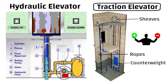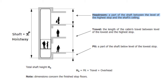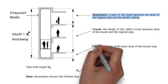Shaft, also known as hoist way, is the space in which one or more elevator cars move. This space is enclosed by fireproof walls, pit, and ceiling for the travel of one or more elevators.